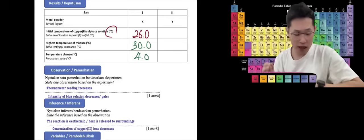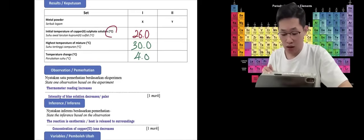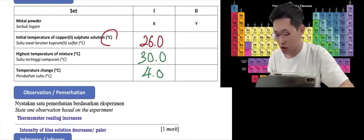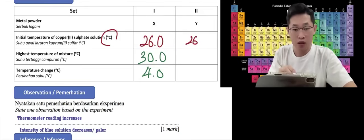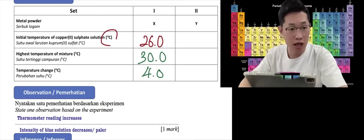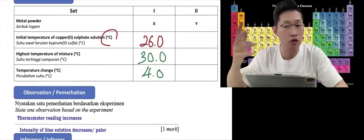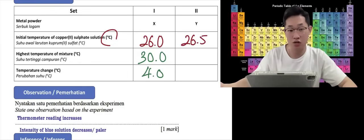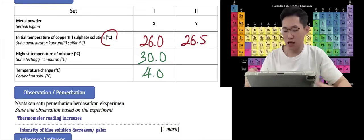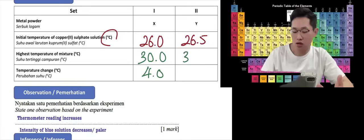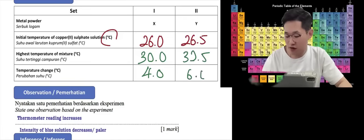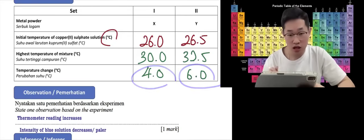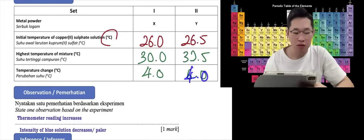Then repeat your experiment again. Make sure you do the experiment set by set — finish this experiment first, then only restart everything all over again. Put the thermometer into the copper-2-sulfate solution and wait for two minutes. Maybe this time the initial temperature is 26.5, and you get a highest temperature of 32.5 — that's an increase of 6 degrees Celsius. These two values should be different; they are not supposed to be the same.